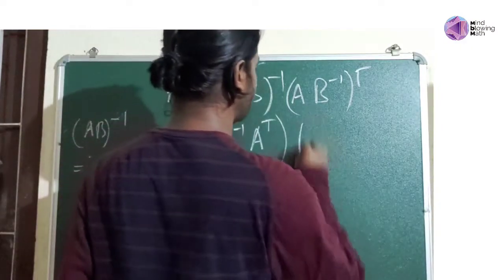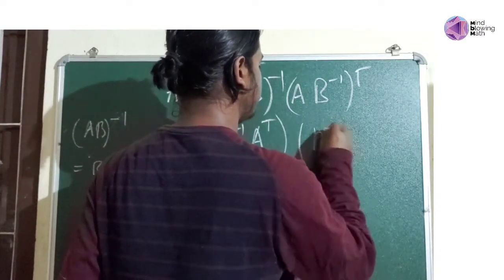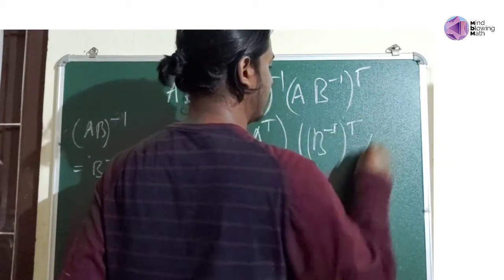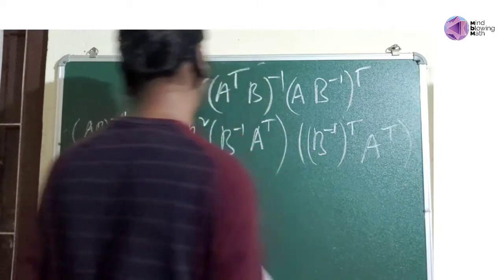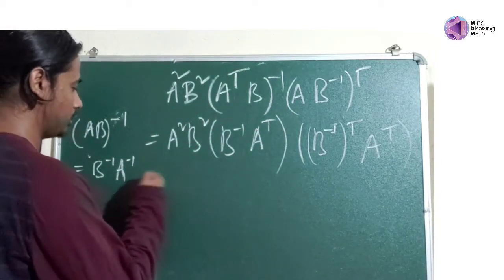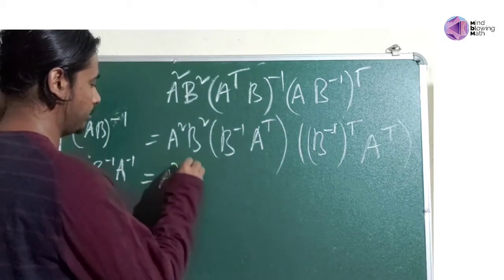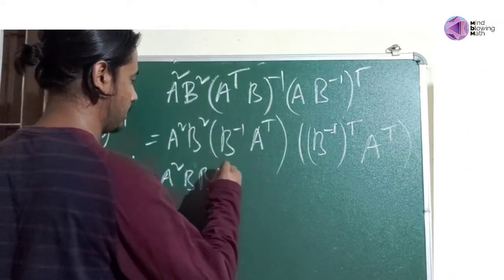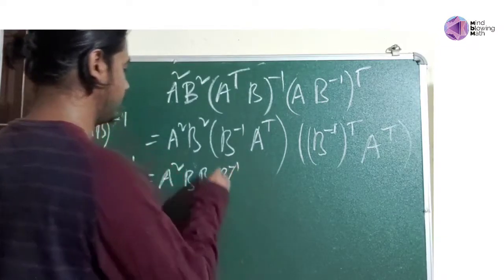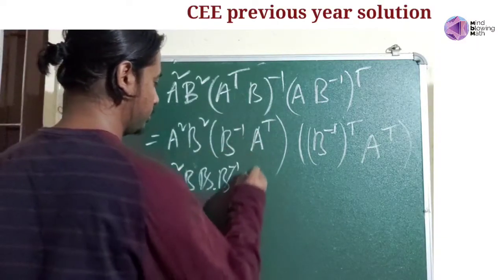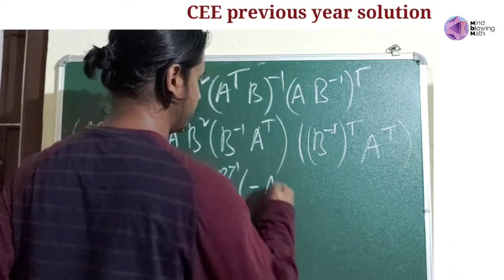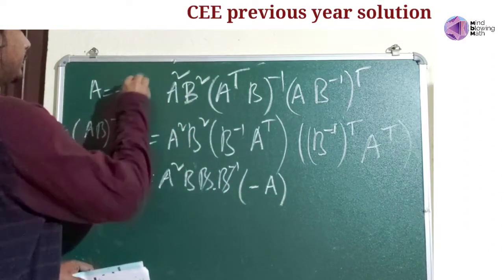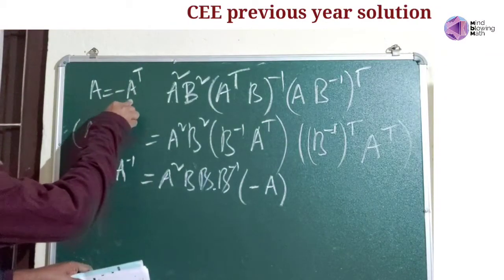Let's try to solve this question. B inverse, B inverse transpose, A transpose, A transpose. So, B inverse, A transpose is equal to minus A. Because A is equal to minus A transpose.